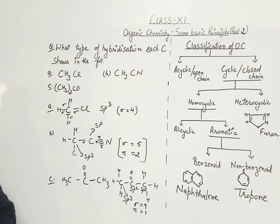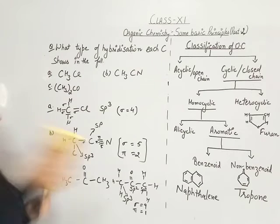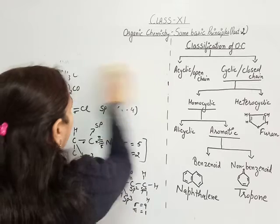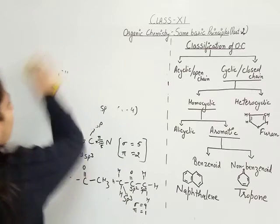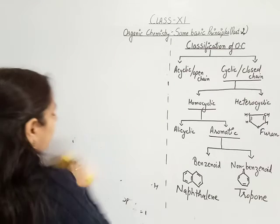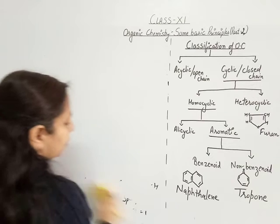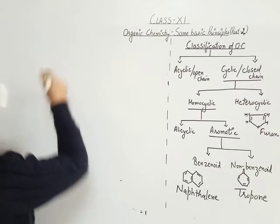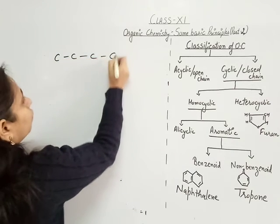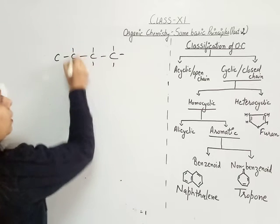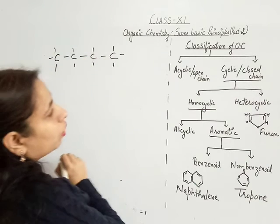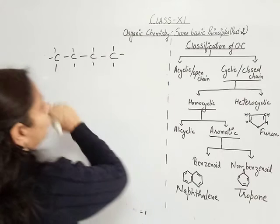Open chain and closed chain: if we write a straight chain structure, it is open chain (acyclic). If we write it in a closed form, it is cyclic. For example, taking butane — four carbon atoms in an open, straight chain — this is an example of an acyclic or open chain compound.